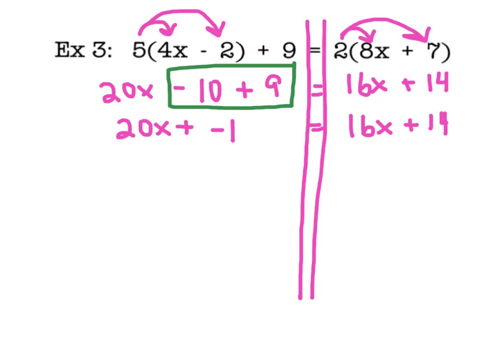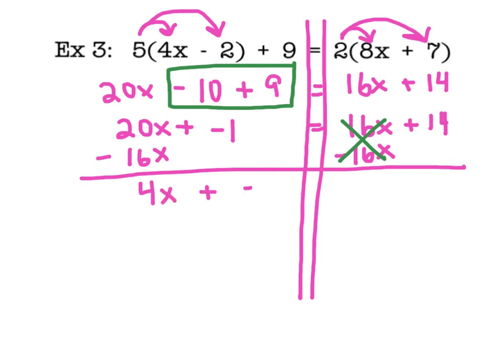Now, my job is going to be to get all of my variable terms on one side and all of my constants on the other side of the equal sign. I'm going to get my variables on the left, so these 16x's on the right have got to go. So, the opposite of 16x is negative 16x, which means I'm subtracting 16x on both sides. These guys are inverse, and they cancel out. On the left, 20x minus 16x gives me 4x plus negative 1 equals, and on the right-hand side, I have 14.